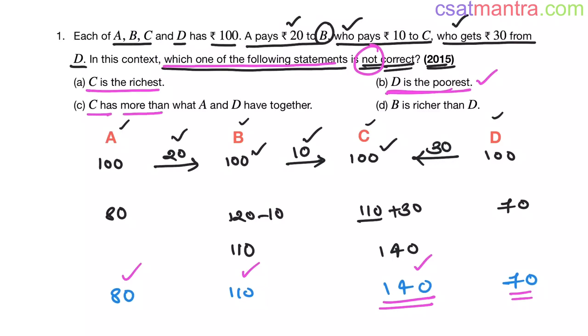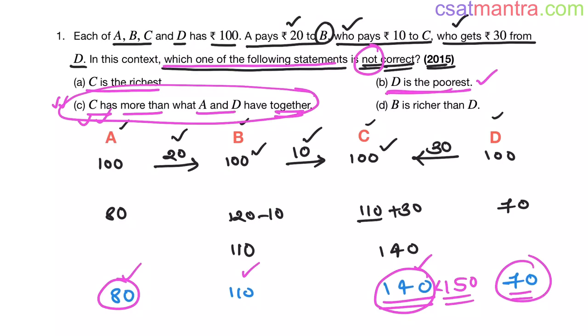C has more than what A and D have together. Together means we have to add A's amount and D's amount. 80 plus 70 is 150. 150 is greater than C's amount. But it is said that C's amount is greater than A plus D's amount. So this statement is incorrect. This is going to be our answer.